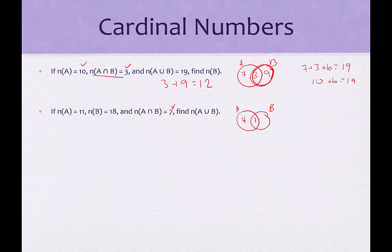In set B, that should add up to 18. I have 7 plus something equals 18. That should be 11. So the union is going to be when we add up these three numbers, that would be 4 plus 7 plus 11, which is 22. So we could say the cardinality of the union of sets A and B in this example is 22.